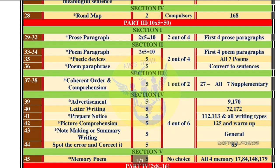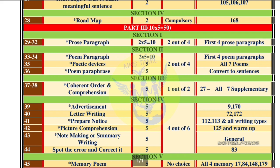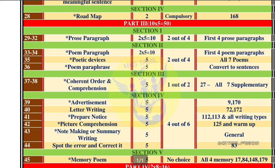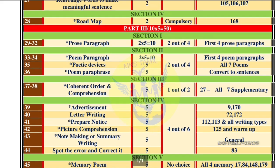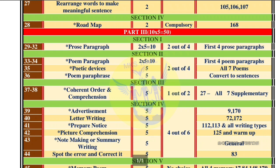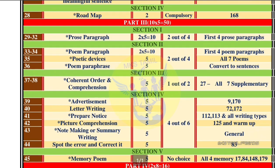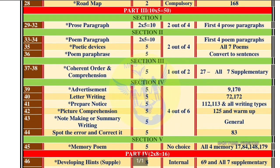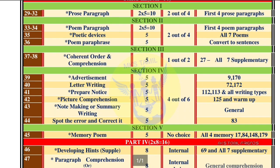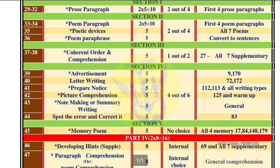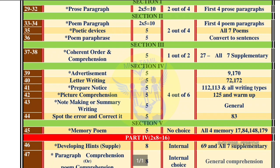For Section 4, check out the symbol complex. For Part 3, it is 10 questions for 5 marks each, so it is 50 marks. For Section 1, check out the paragraph on page 29 to 32 — that gives 4 marks. You can put a poem in pages 32 and 34.